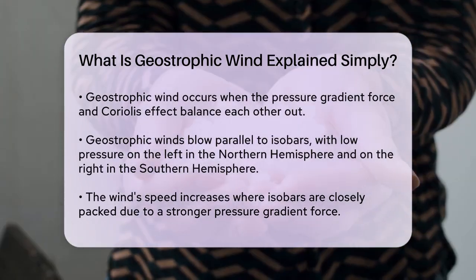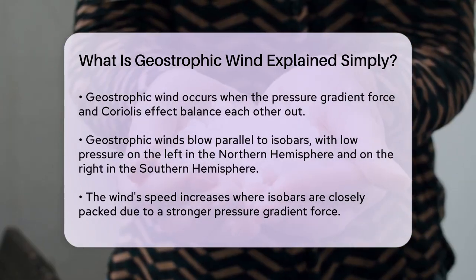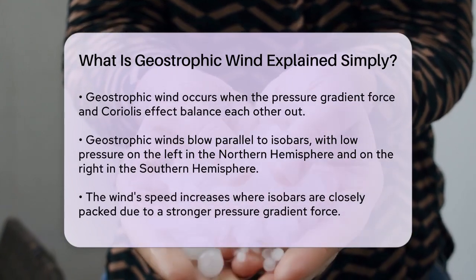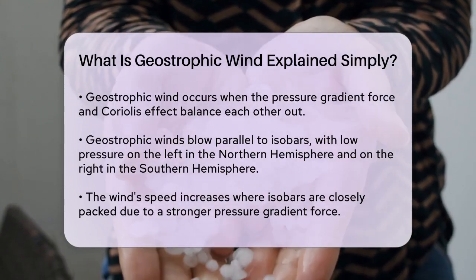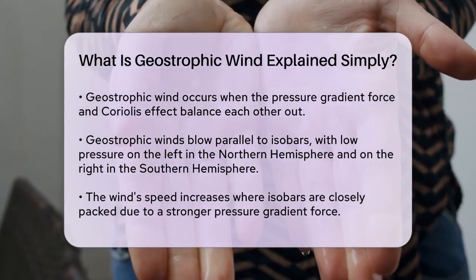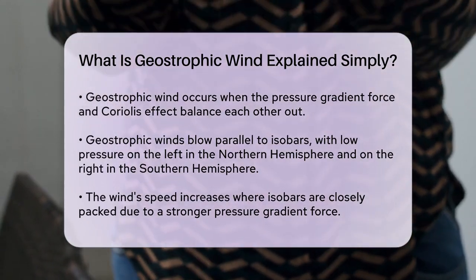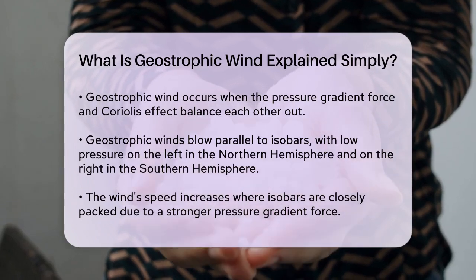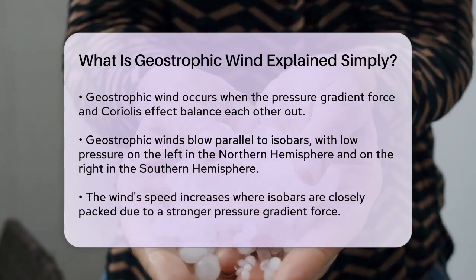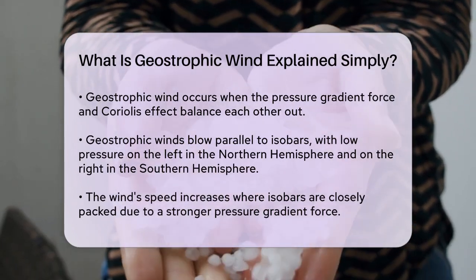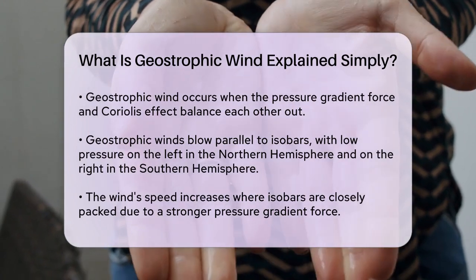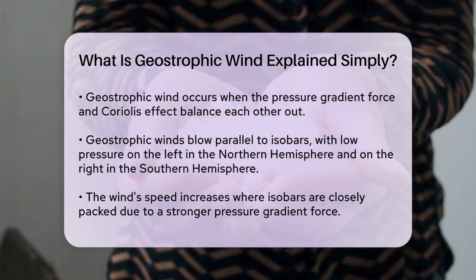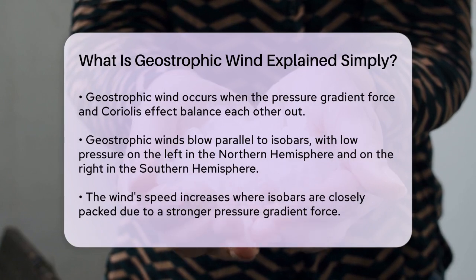Here's a simple way to visualize it. Imagine air moving from a high pressure area to a low pressure area. As it moves, the Coriolis effect starts to deflect it. This deflection continues until the Coriolis force equals the pressure gradient force, at which point the wind starts blowing parallel to the isobars.